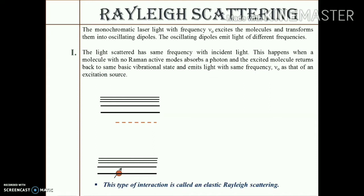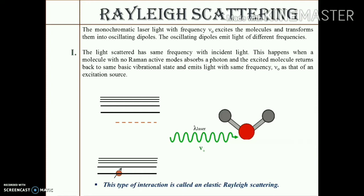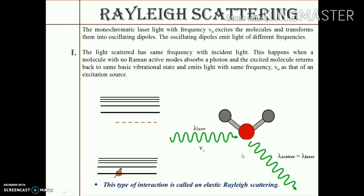Next we will try to understand the scattering observed in this technique. The monochromatic laser light with frequency ν₀ is incident upon a molecule, wherein the molecule absorbs the energy of the radiation and transforms into an oscillating dipole with a higher energy. When this happens, the oscillating dipole emits light which possesses the same frequency as that of the laser beam incident upon the molecule — meaning the frequency of the scattered radiation is the same as that of the incident radiation.